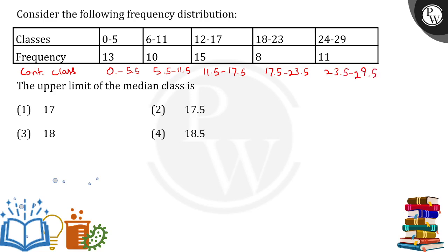The median class is the class where the (n+1)/2 th term lies. In the given table, the value of n is 29. So n+1 by 2 equals 29+1 by 2, which is 30 by 2, meaning we focus on the 15th term.